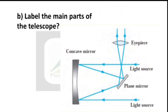Question B: Label the main parts of the telescope. The telescope's diagram from the first question was not labeled, so now we have to label it. When we label it, the parts are: eyepiece, light source, plane mirror, and concave mirror.